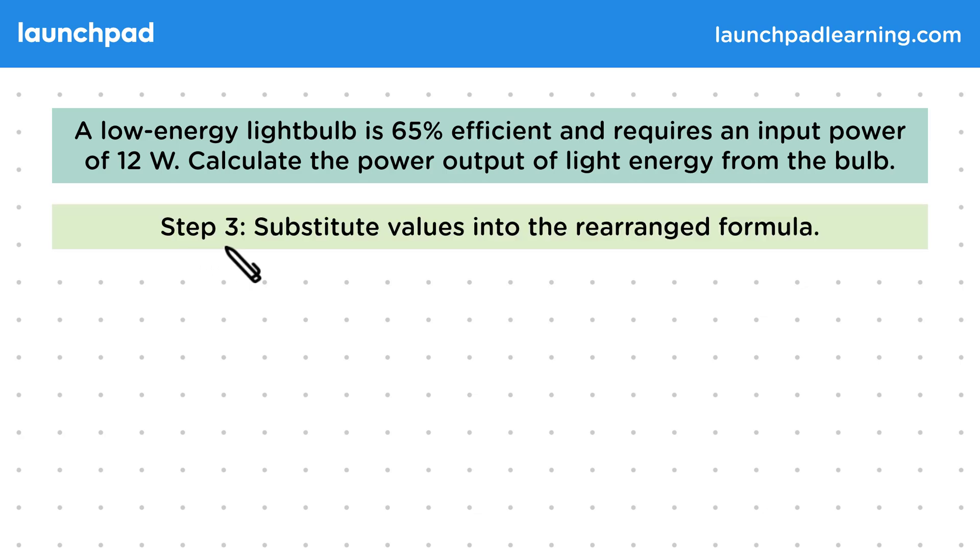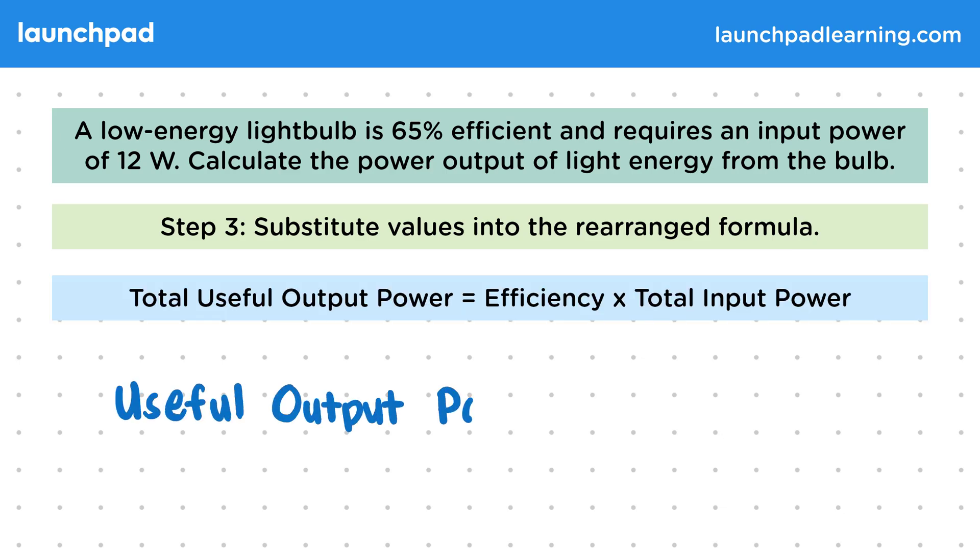For step 3, all we need to do is substitute the values into the rearranged formula. The useful output power is equal to 0.65 multiplied by 12 watts, and that gives us 7.8 watts of useful output power.